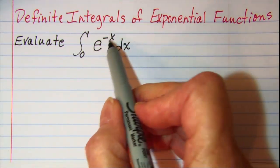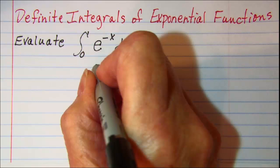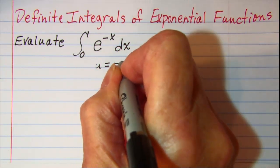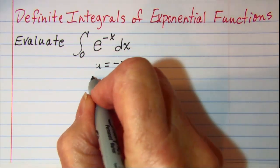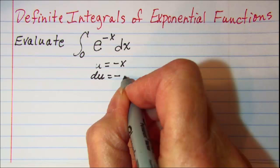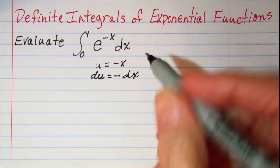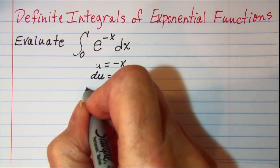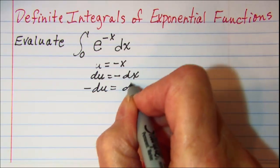We first need to let u be equal to negative x. Then the derivative of this equation would be du equals negative dx. We need to substitute in for dx, so dividing both sides by negative 1, we have negative du equals dx.